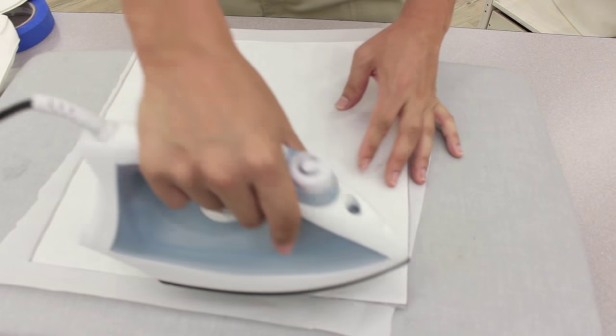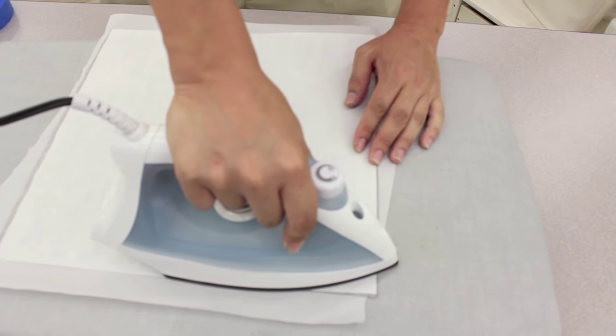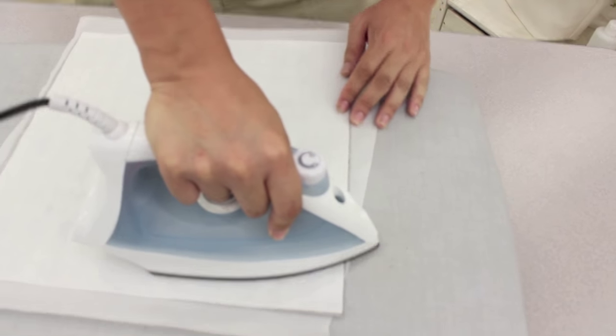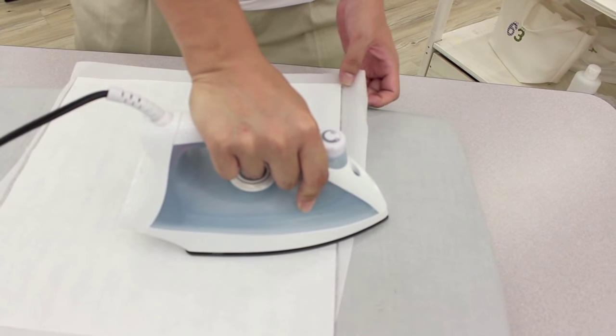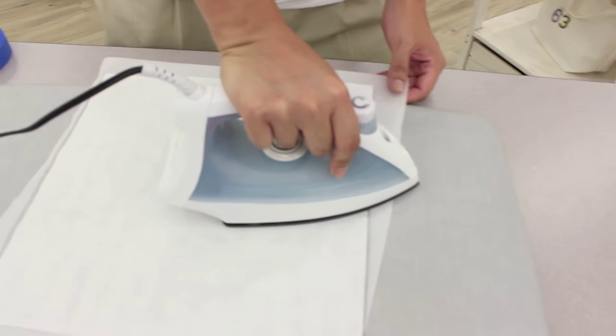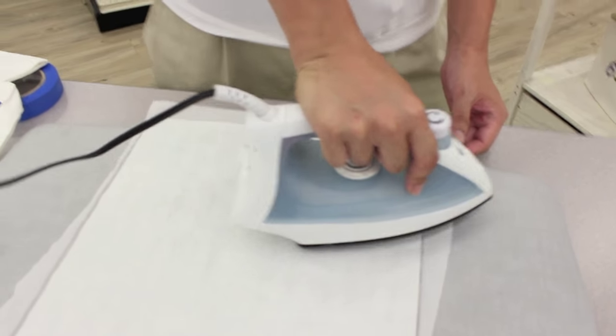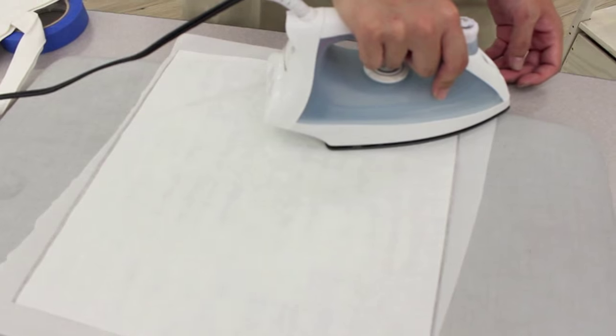This is so the film can adhere in all places evenly and you get a lot of heat on the napkin. Again, the parchment paper, you can see if the deco film was hanging over the napkin at any part it might get on your ironing board. We don't want that to happen so we use that parchment paper.